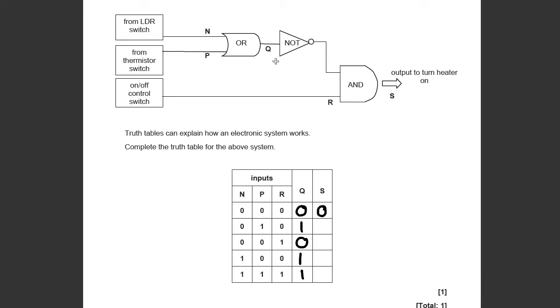So here Q is a one. That means there's zero going in this side. R is a zero, so this must be zero. Both of these are zero here. So Q is a zero here. So out of the NOT gate is a one. R is a one, so S is a one.